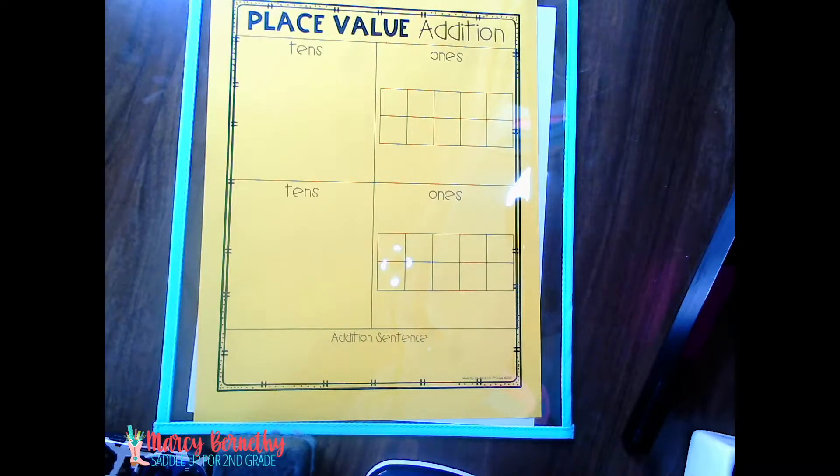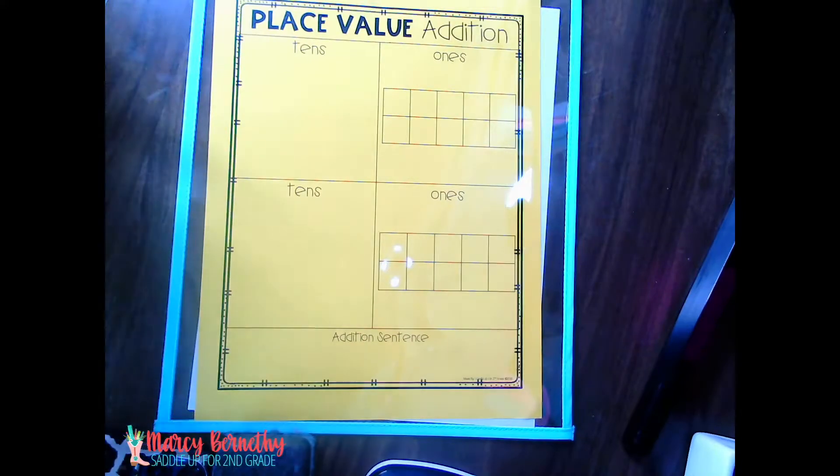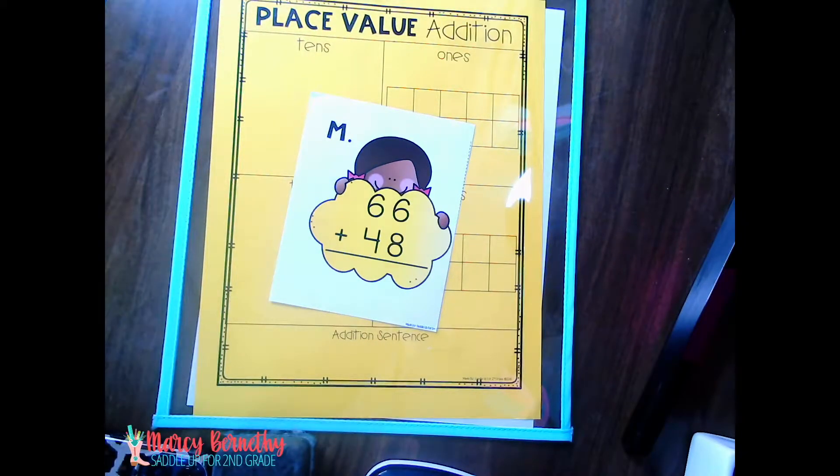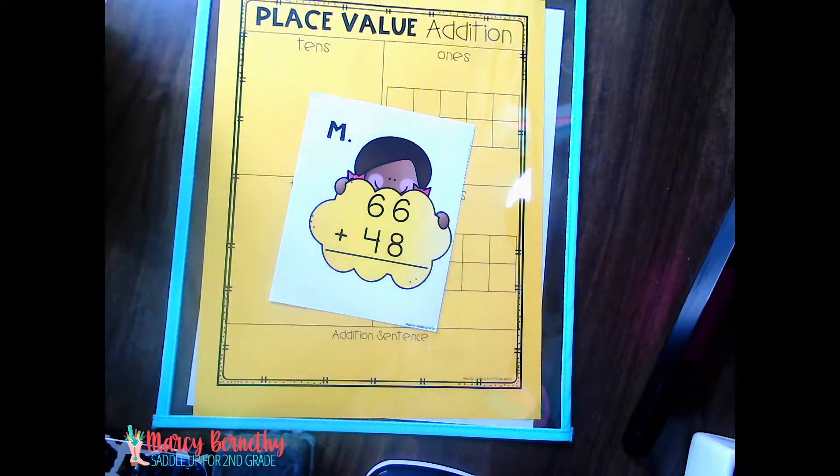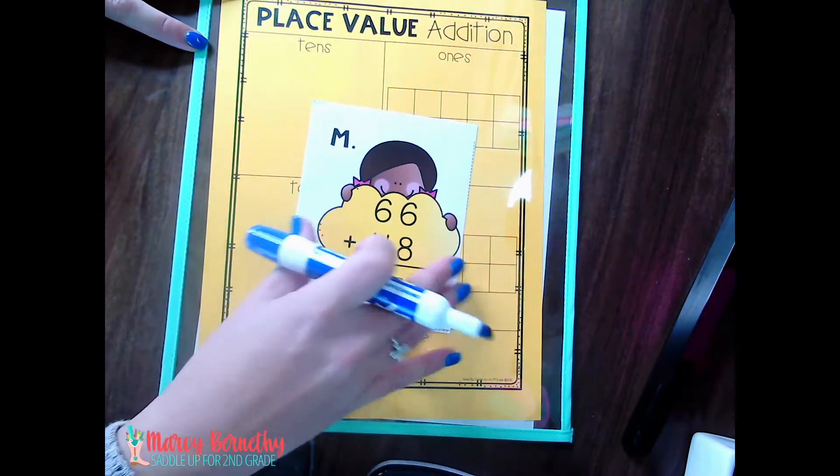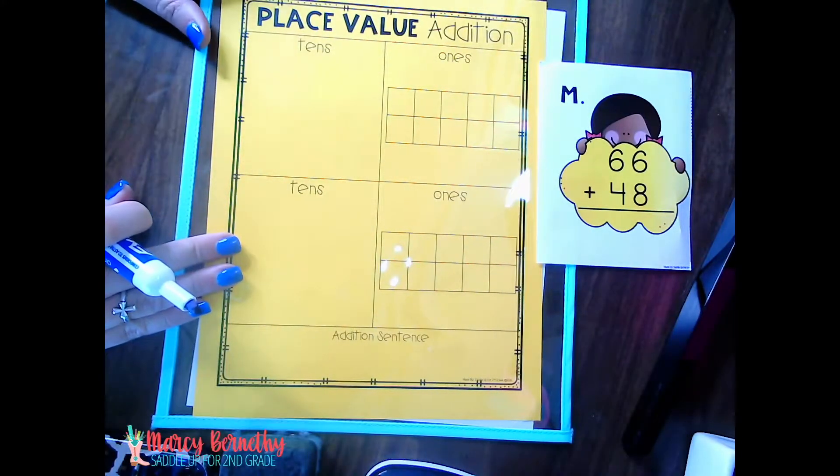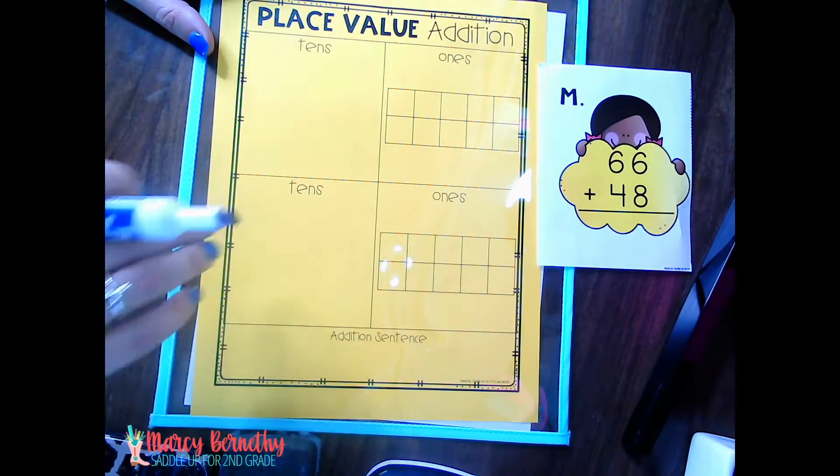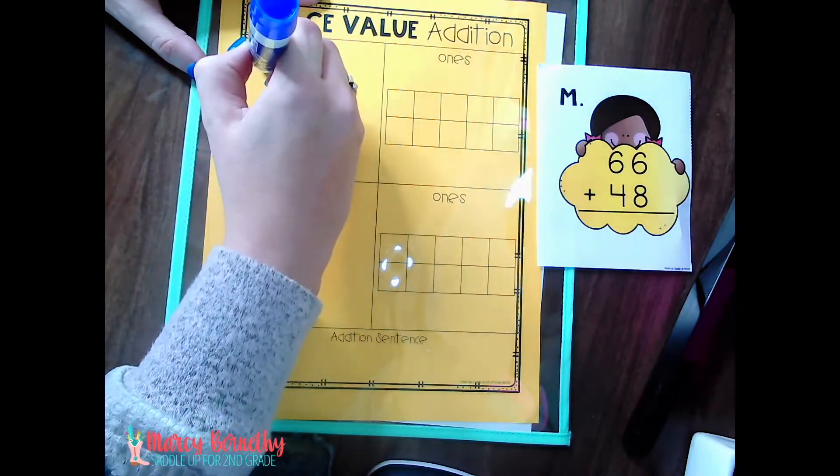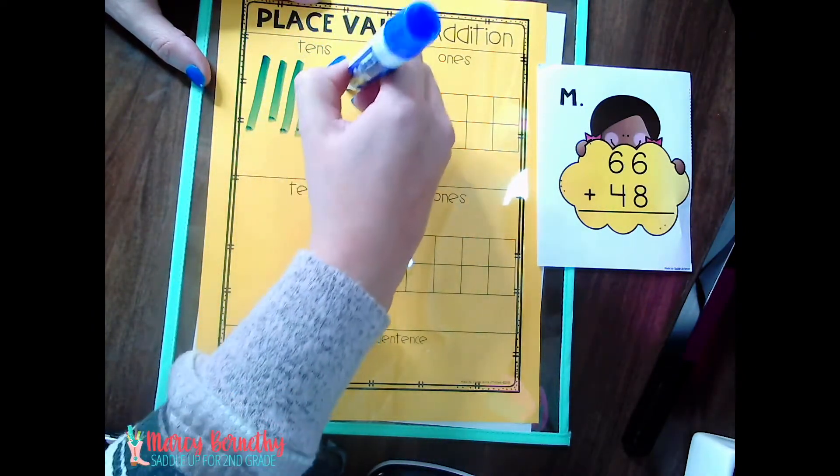So let's say that our addition problem is 66 plus 48. Now I'm going to model this actually drawing base 10 blocks just because I don't have physical base 10 blocks on hand with me right now. But in the beginning, I would definitely use real base 10 blocks or manipulatives so that kids can actually physically move and model the problem with their base 10 blocks. But it's also very important for them to learn to draw it out as well. So in this example, I am going to be drawing out the base 10 blocks. So we have 66 plus 48. So they are going to build the first addend, which would be 66 with base 10 blocks. You can also have them draw it out like I am going to do now. So they would draw or build six tens and six ones.